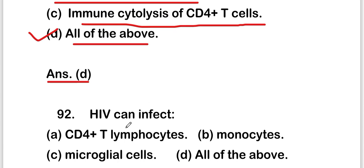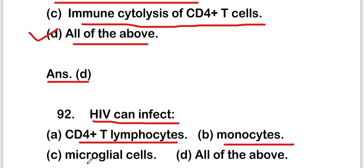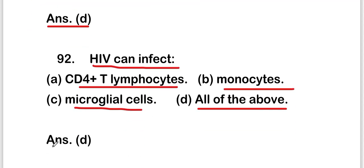The next question is: HIV can infect CD4+ T lymphocytes, monocytes, microglial cells, or all of the above? The right answer is option D — all of the above. HIV can infect CD4+ T lymphocytes, monocytes, and microglial cells.